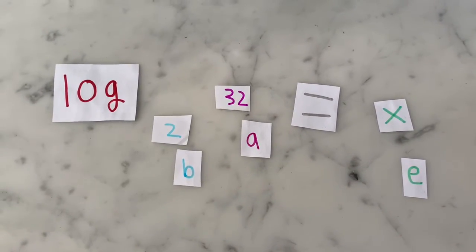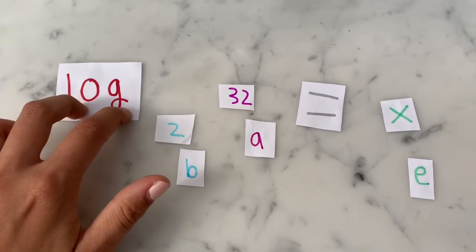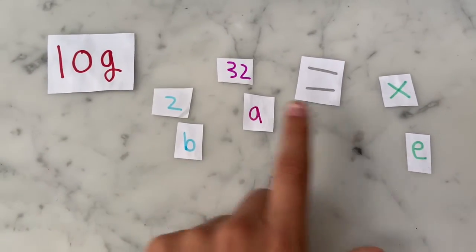To rearrange it to the other form without the logarithm sign, you just have to remember b, e, a.